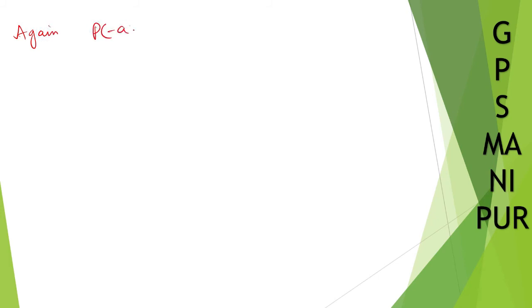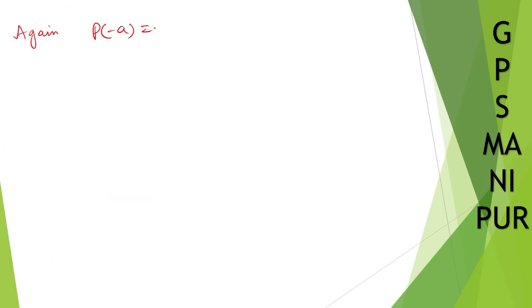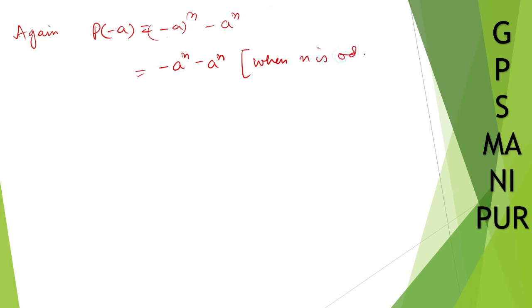Now again, p(-a) = (-a)^n minus a^n. When n is odd, (-a)^n minus a^n equals minus a^n minus a^n, which equals minus 2a^n. This does not equal zero.